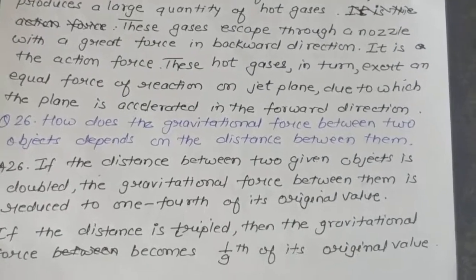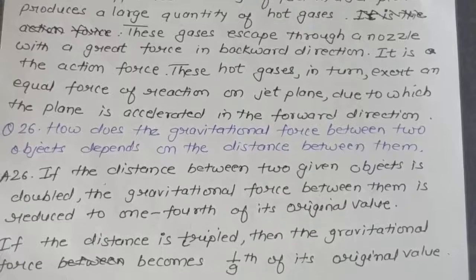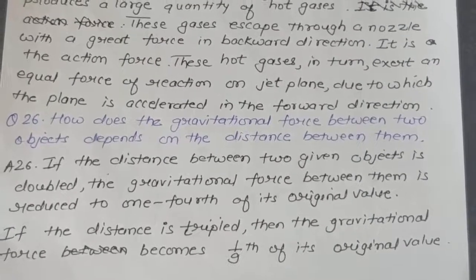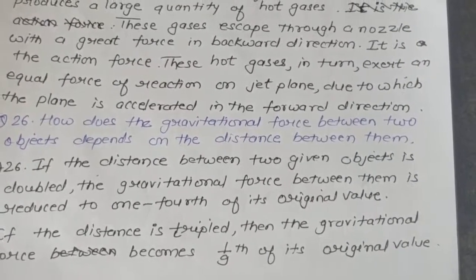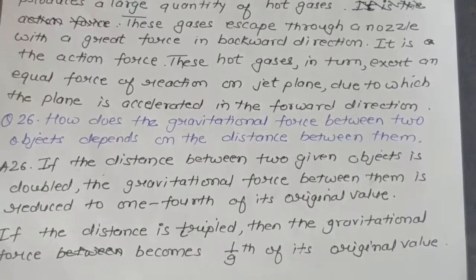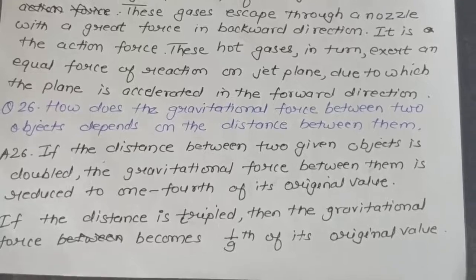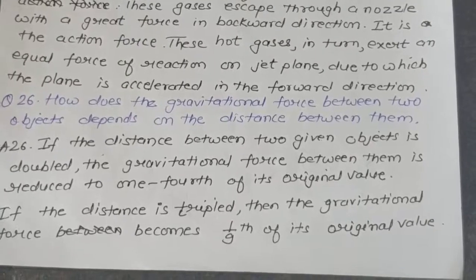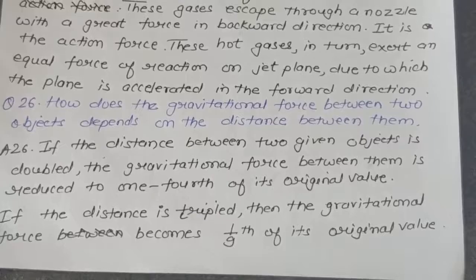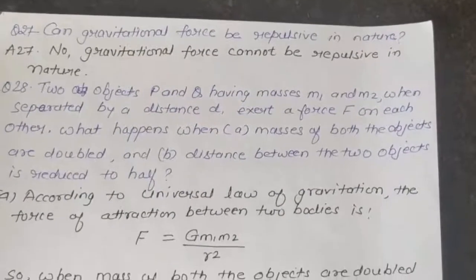Question 26: How does the gravitational force between two objects depend on the distance between them? Answer: If the distance between two objects is doubled, the gravitational force is reduced to one-fourth of its original value. If the distance is tripled, the gravitational force becomes one-ninth of its original value.